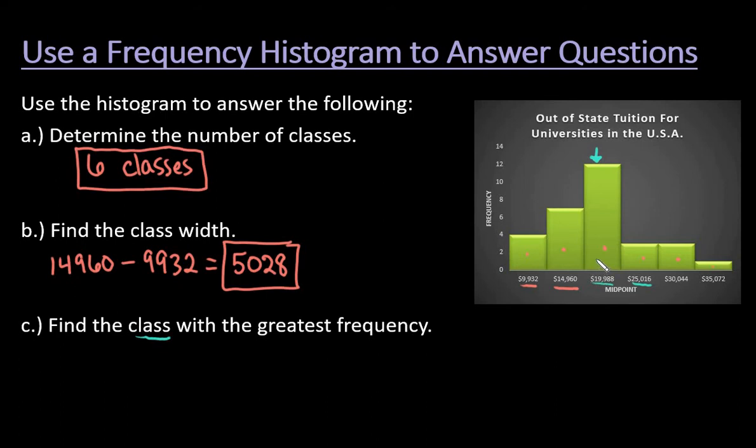It's not asking what is the greatest frequency, it wants to know what the class limits are. Since it gives us the midpoint, the midpoint is 19,988. We need to figure out what are our limits at the bottom and what would we start counting at for our next one. We would find our lower class limit for this class, and then we would find our upper limit or the starting of the next class.